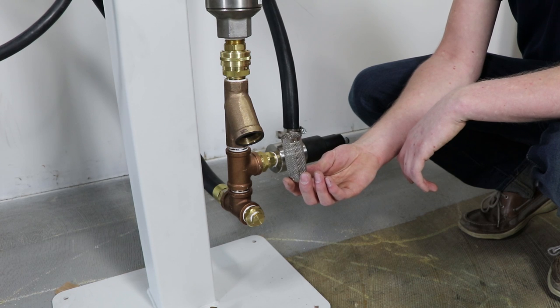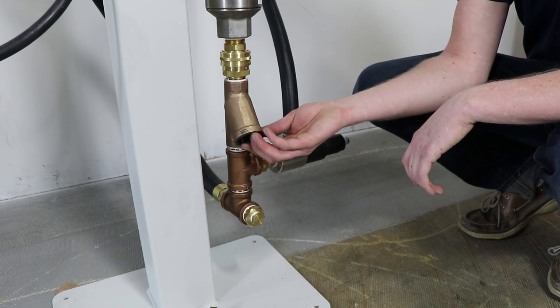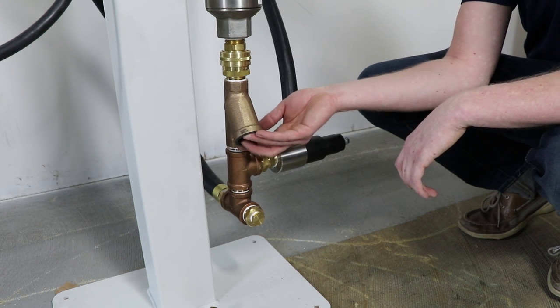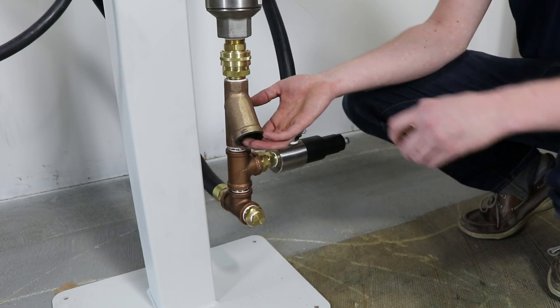To reassemble the Y-strainer put your new or clean screen back into the housing. Next if you ordered a replacement screen put on the new gasket. If you are not replacing your screen make sure that the gasket is still intact.